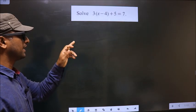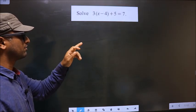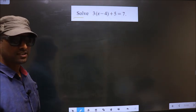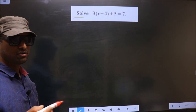Solve 3(x - 4) + 5 = 7. They told us to solve, so we should find the value of x.